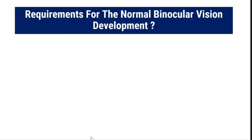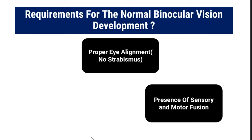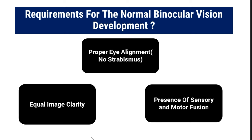The requirements for normal binocular vision to develop are: number one, the person should have proper eye alignment — there should be no squint; second, there should be presence of sensory and motor fusion; and third, there should be equal image clarity from both eyes. Both eyes should be able to form equally clear images on the retina, without significant refractive error or problems like cataract or corneal opacity in one eye.